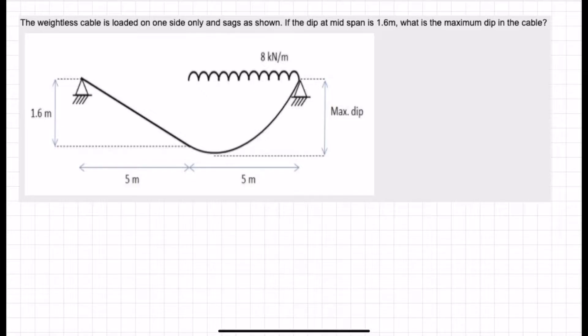Here we have another question from the iStruck-T Structural Behaviour course. This one's about cables. The weightless cable is loaded on one side only and sags as shown. If the dip at the mid-span is 1.6 meters, what is the maximum dip in the cable? Try this one for yourself, pause the video and come back to it when you are done.